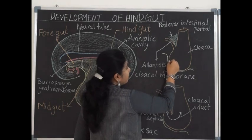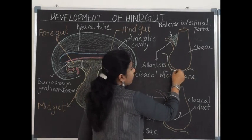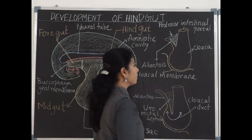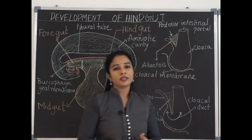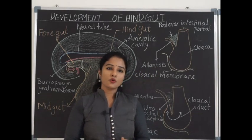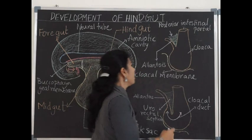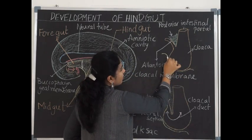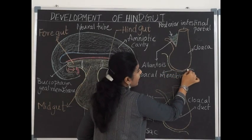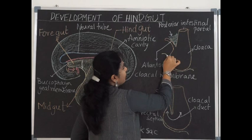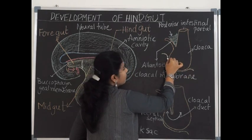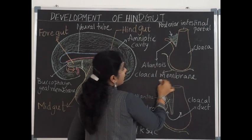The endoderm approximates with the ectoderm of the proctodeum to form the cloacal membrane. The cloacal membrane is a bilaminar structure consisting of ectoderm and endoderm, with no intervening mesoderm. The cloacal membrane initially extends on the ventral side of the cloaca and is limited on either side by elevations formed by the primitive genital folds.